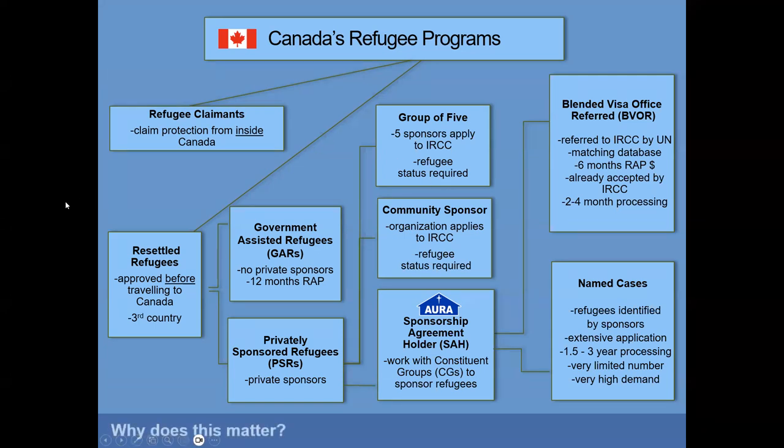So, why does this matter? All of this is important because people base their expectations off of previous experiences and what they hear from others. And because there are so many different programs and streams through which a refugee could come to Canada, it means that the timelines they experience, the support they get, and the benefits they receive could all vary based on how they fit in.